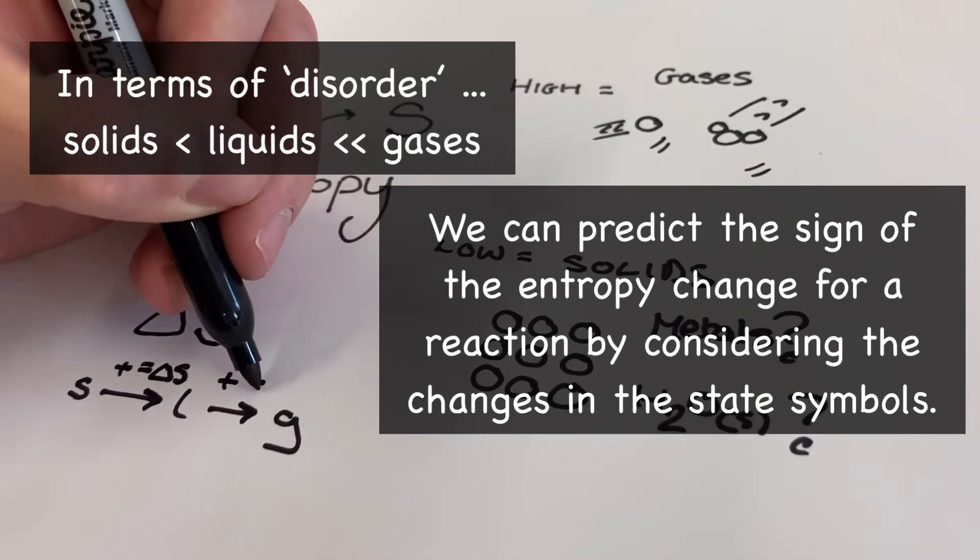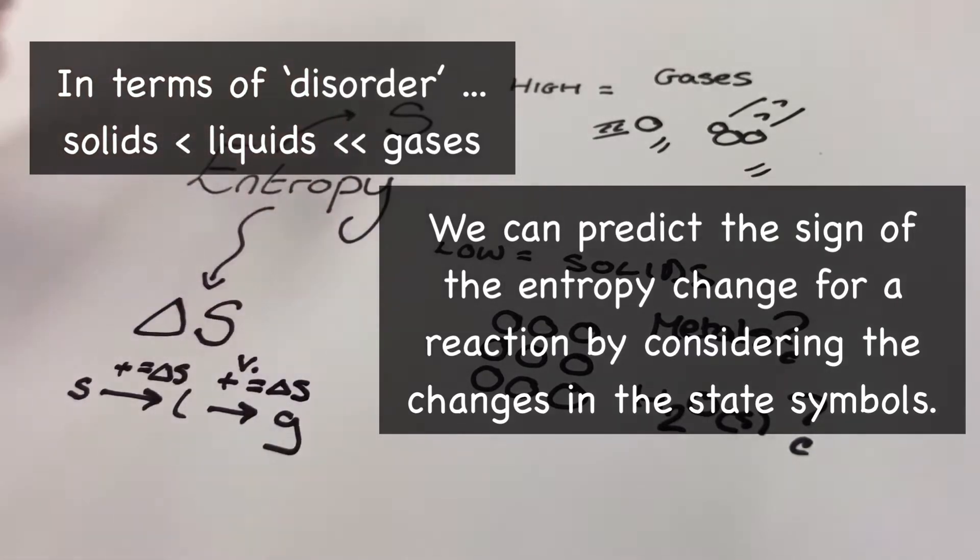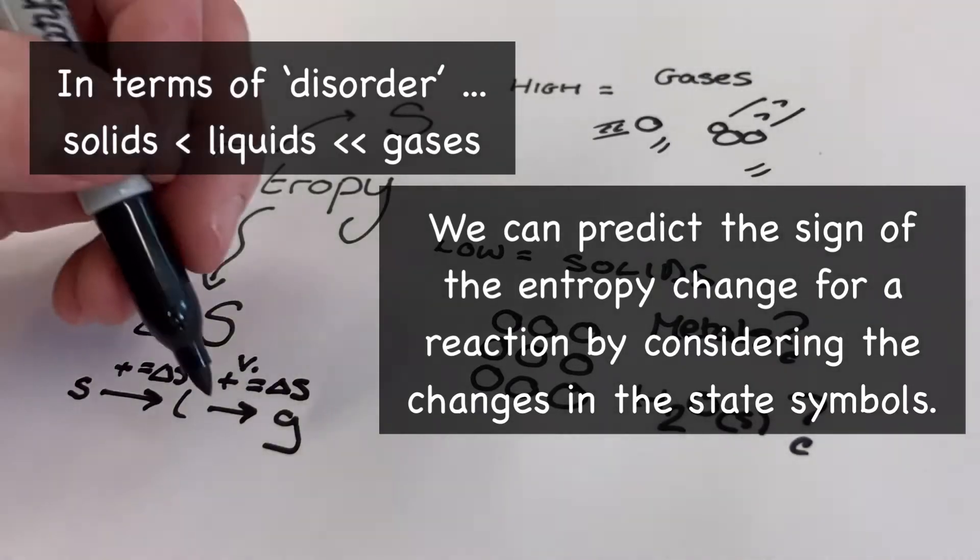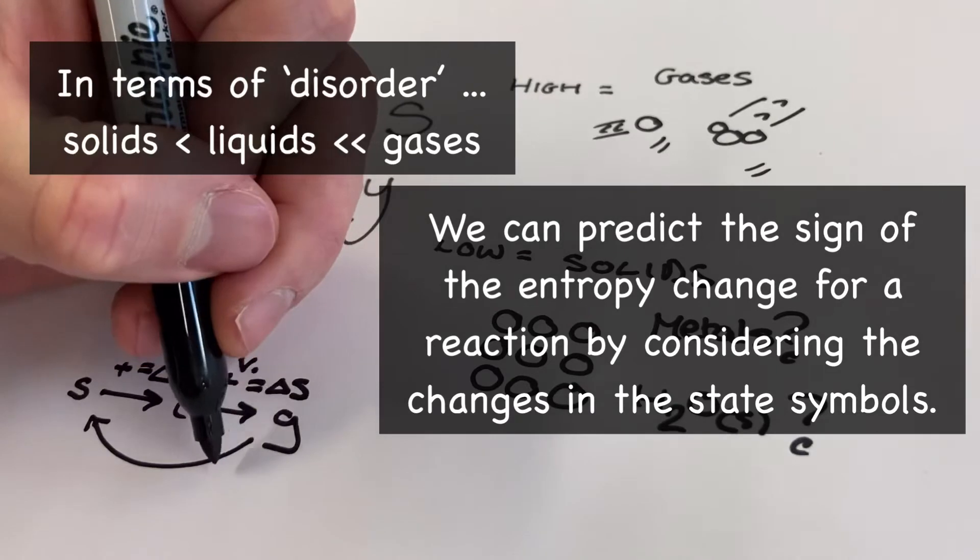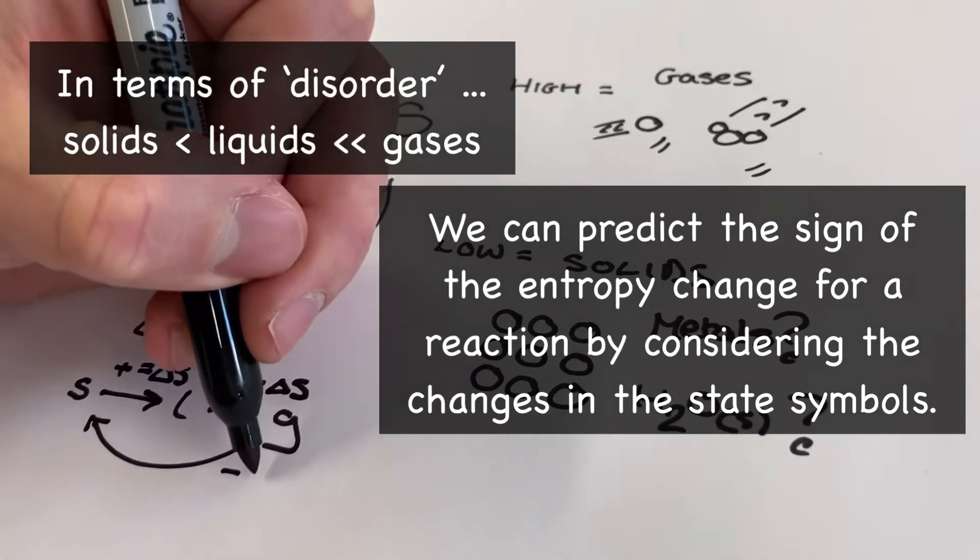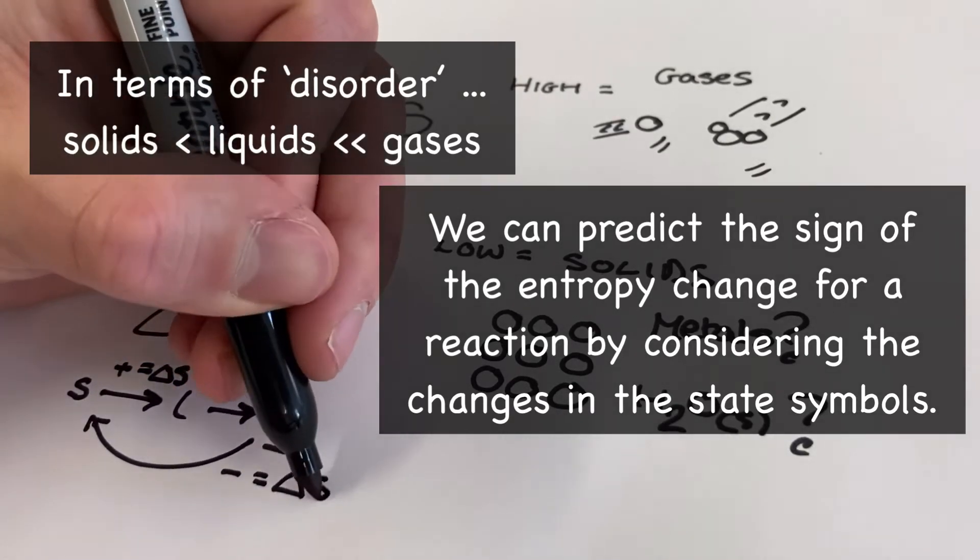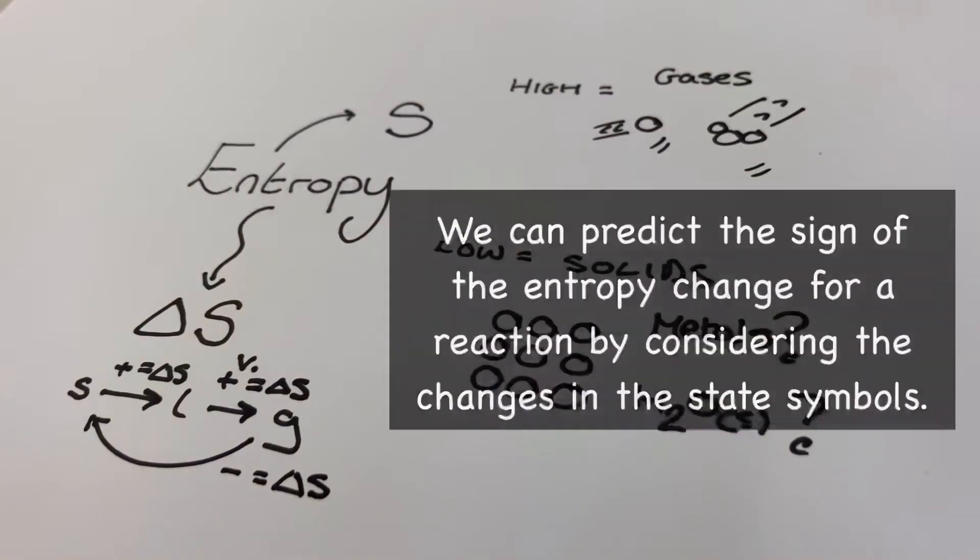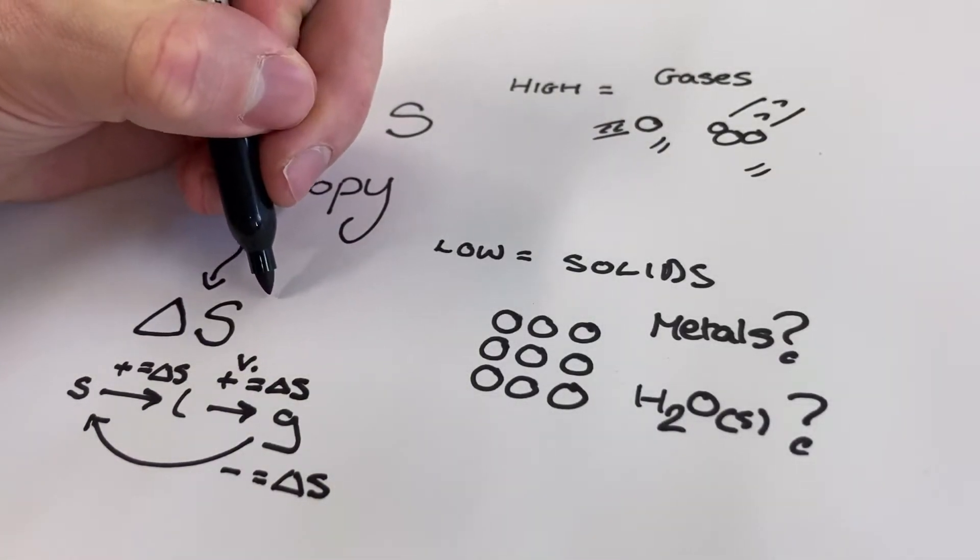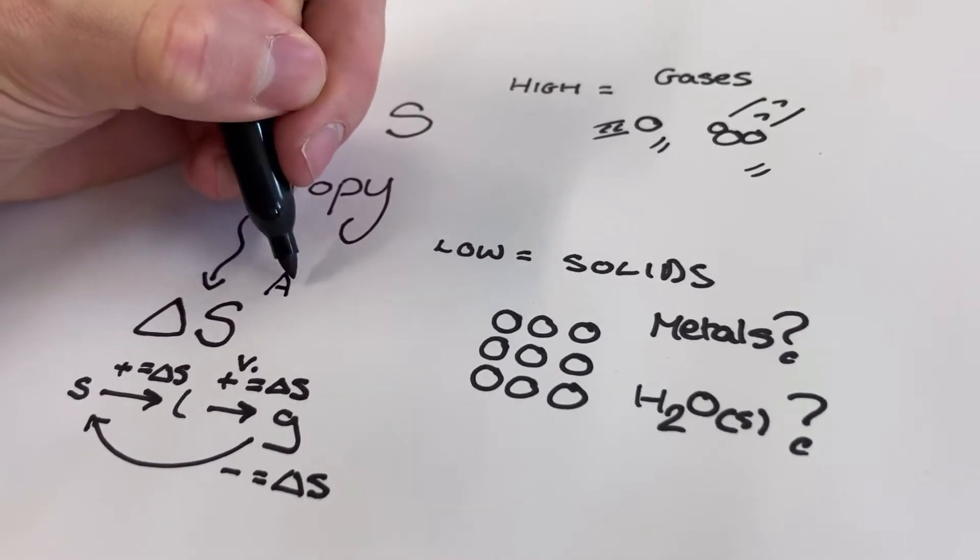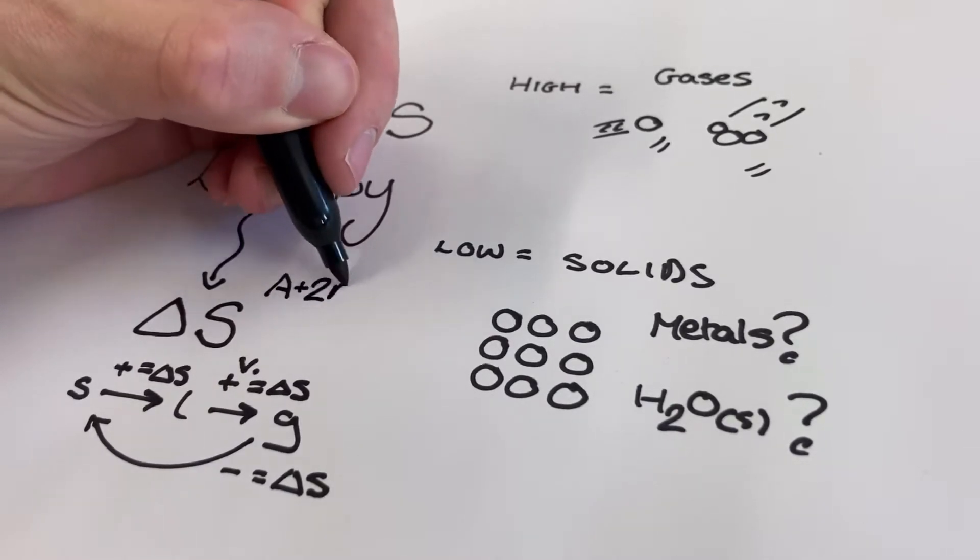An entropy change can be positive or negative, just like an enthalpy change, but this time we're not going to use the terms exothermic and endothermic. If a reaction equation shows a change to more gases or more liquids, then we can predict a positive entropy change for that reaction. We could also predict a negative entropy change if we saw liquids, for example, change to solids.